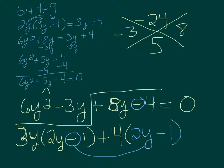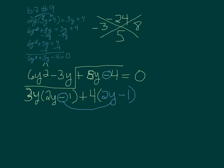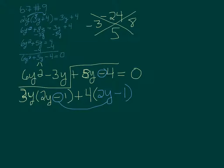Since these two match, we're good to go. That means our factoring is correct. So we can take out that 2y minus 1 since each term has one, and we're left with 3y plus 4. And that equals 0.